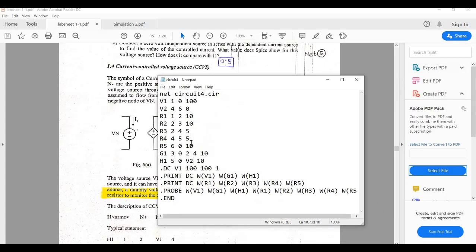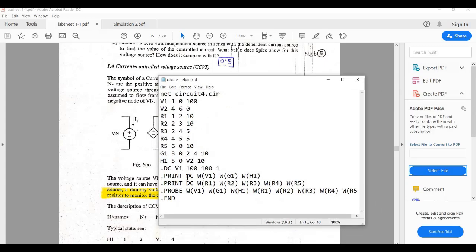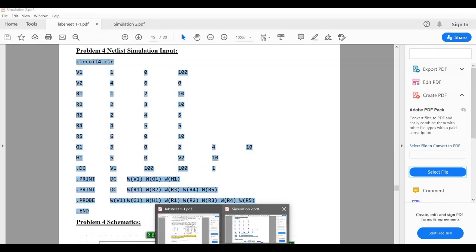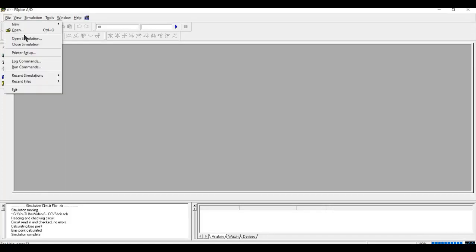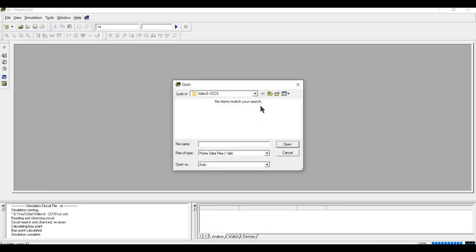So the only difference here is that you can see that in .print command we use W. So what is this W doing? So if you know the PSPICE arguments, this W is nothing but power. So if we run this in our PSPICE AD, we can cross-verify our result and let us check.